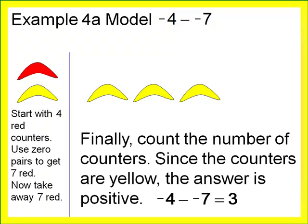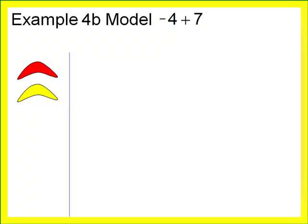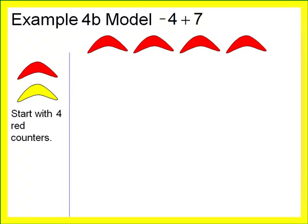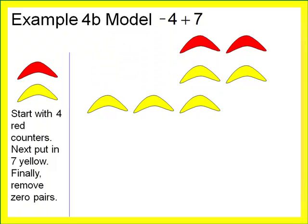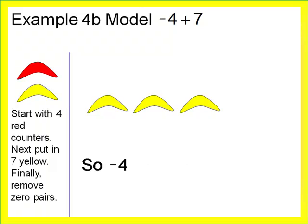Negative four minus negative seven equals positive three. For the second part of example four, we look at negative four plus positive seven. Start with four red counters to represent negative four, then add seven yellow counters for positive seven. Remove the zero pairs. Negative four minus negative seven and negative four plus positive seven give the same answer of positive three.